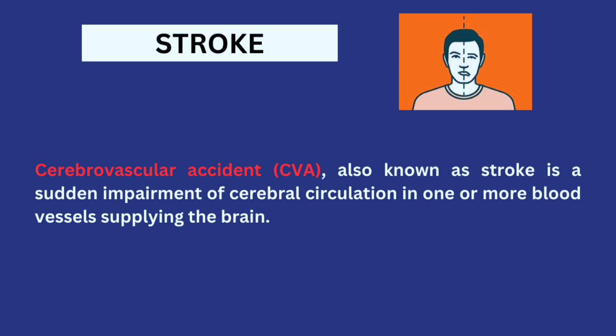For context, cerebrovascular accidents is a sudden impairment of cerebral circulation in one or more blood vessels supplying the brain. When one or more blood vessels supplying blood to the brain become shut off or impaired, a stroke can occur. There are various types of stroke — the ischemic stroke and the hemorrhagic stroke — but we're just going to be basing our nursing care plan on the common things that happen with stroke.